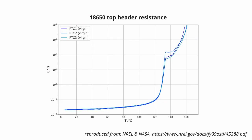Modern PTC materials have solved that problem, and if we take a look at the resistance-temperature curve of a typical 18650 top cap, we can see that it has a low resistance of around 20 mΩ at room temperature and increases at rising temperatures. At around 130 degrees C, the resistance increases abruptly by around three orders of magnitude.